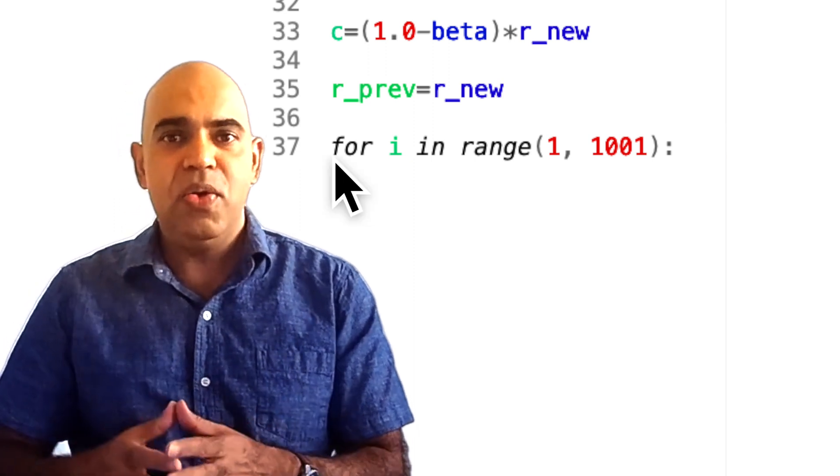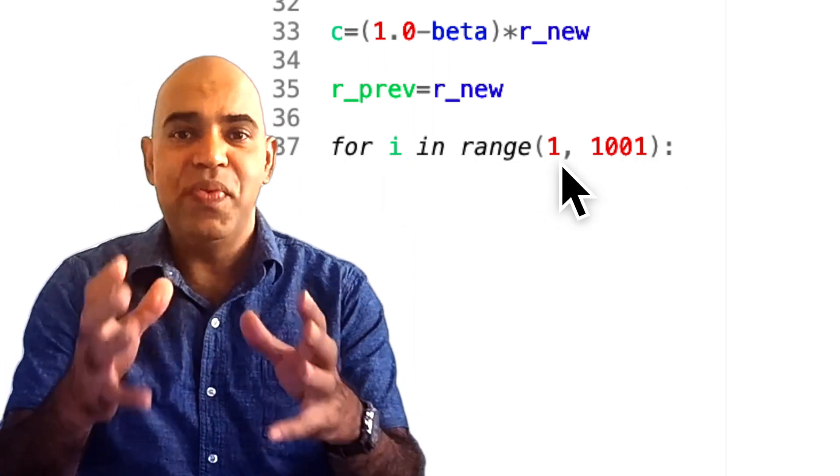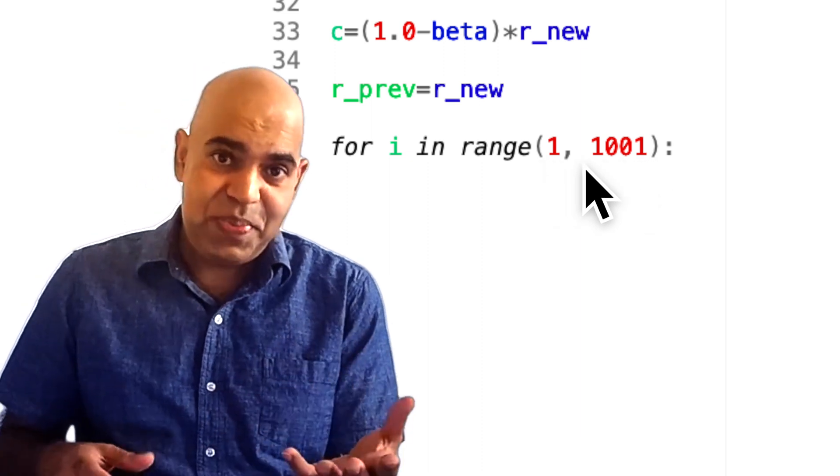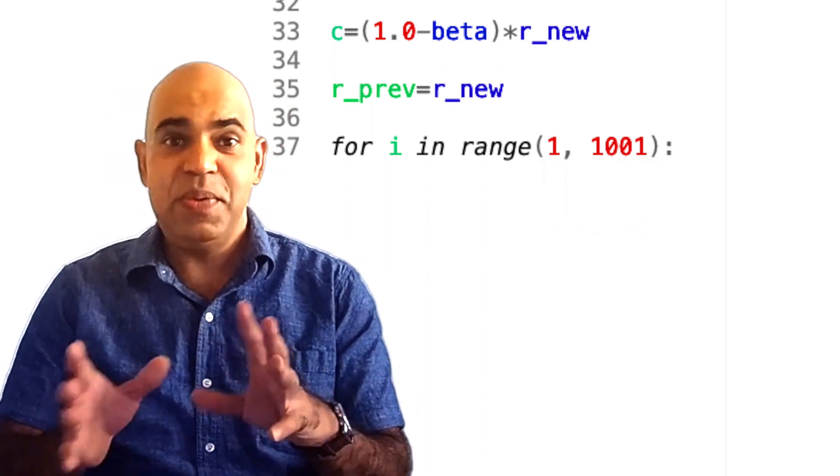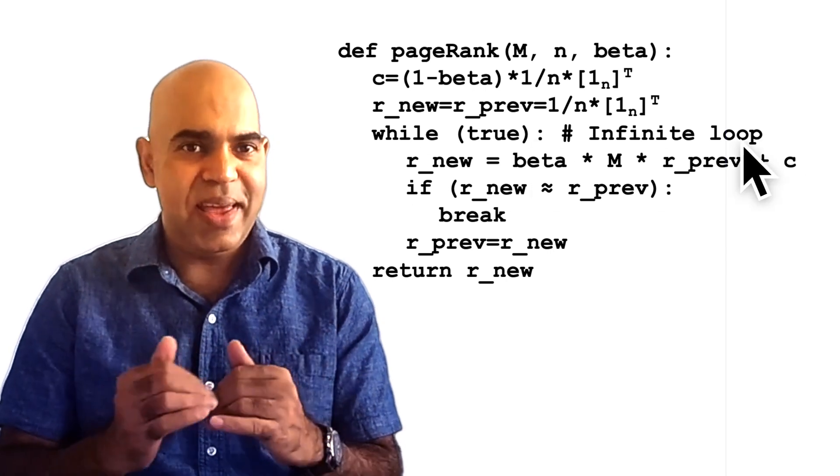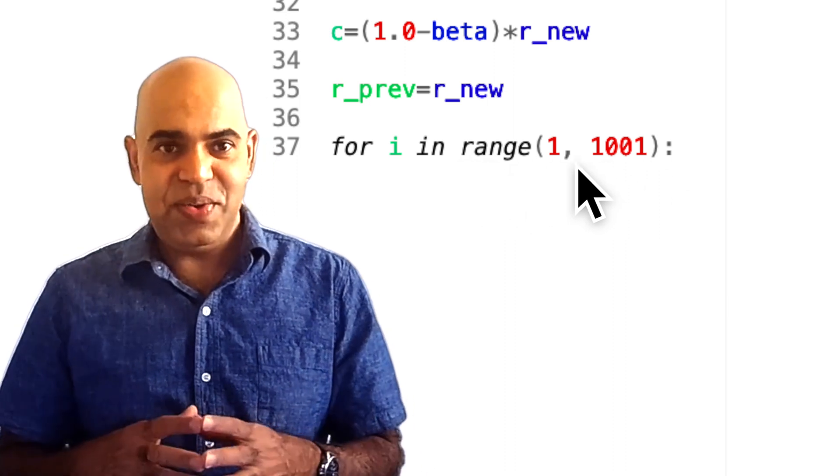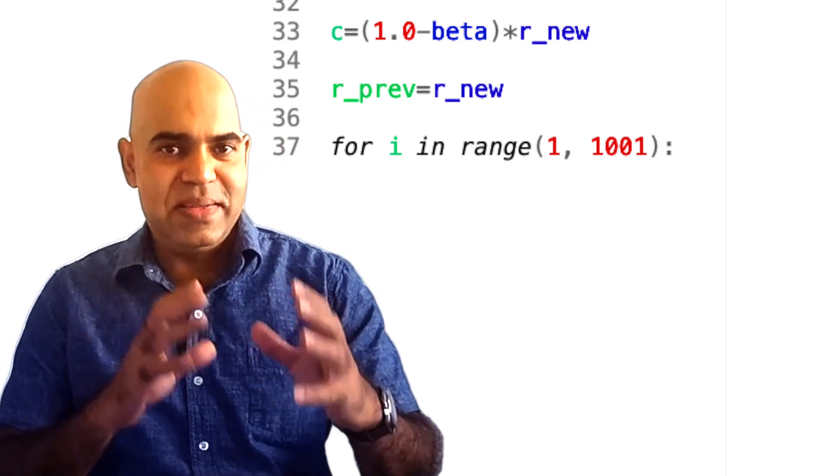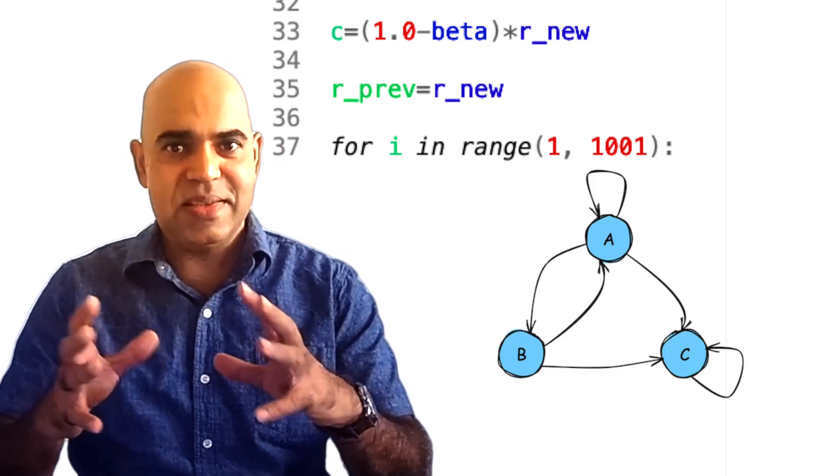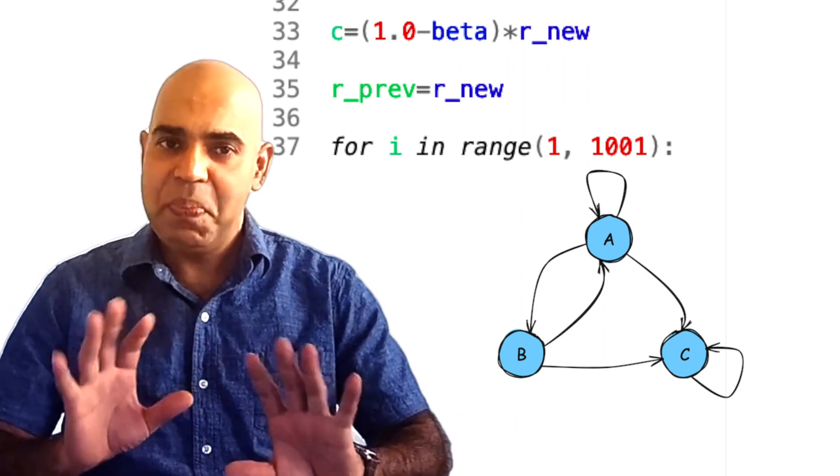We then enter the main loop of our algorithm. This loop iterates a maximum of 1000 times, which should be sufficient for convergence in most cases. In our pseudocode, we used an infinite loop. In practice, even 1000 iterations are too much. We will see that for this size of the network, the convergence will occur pretty fast.